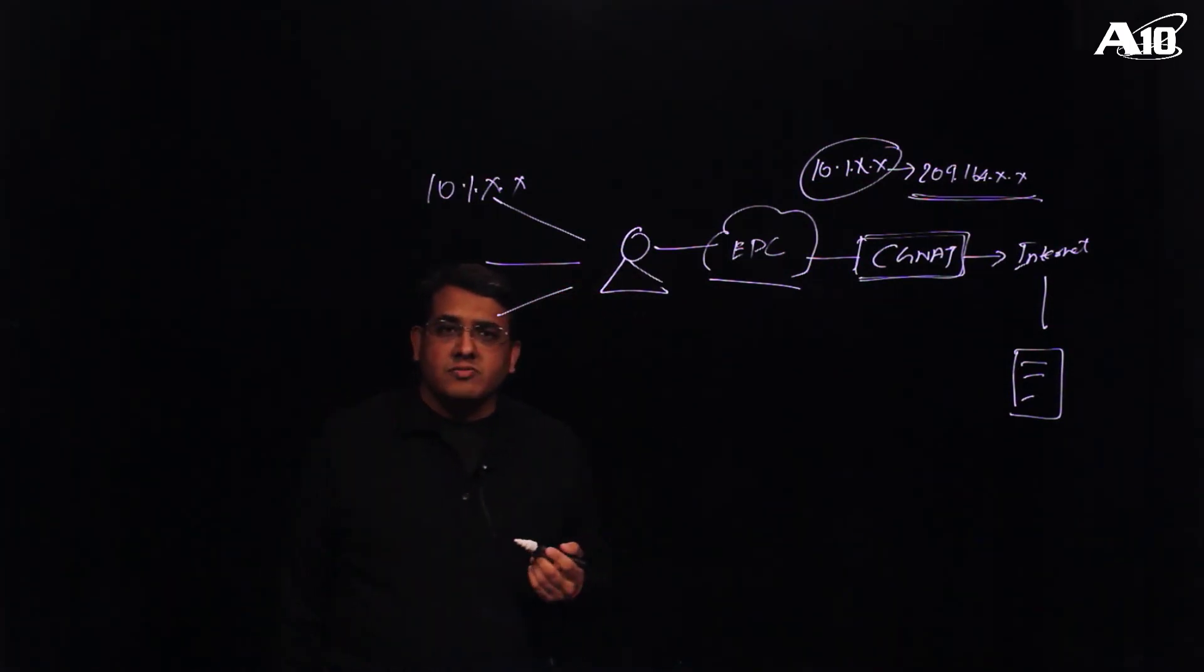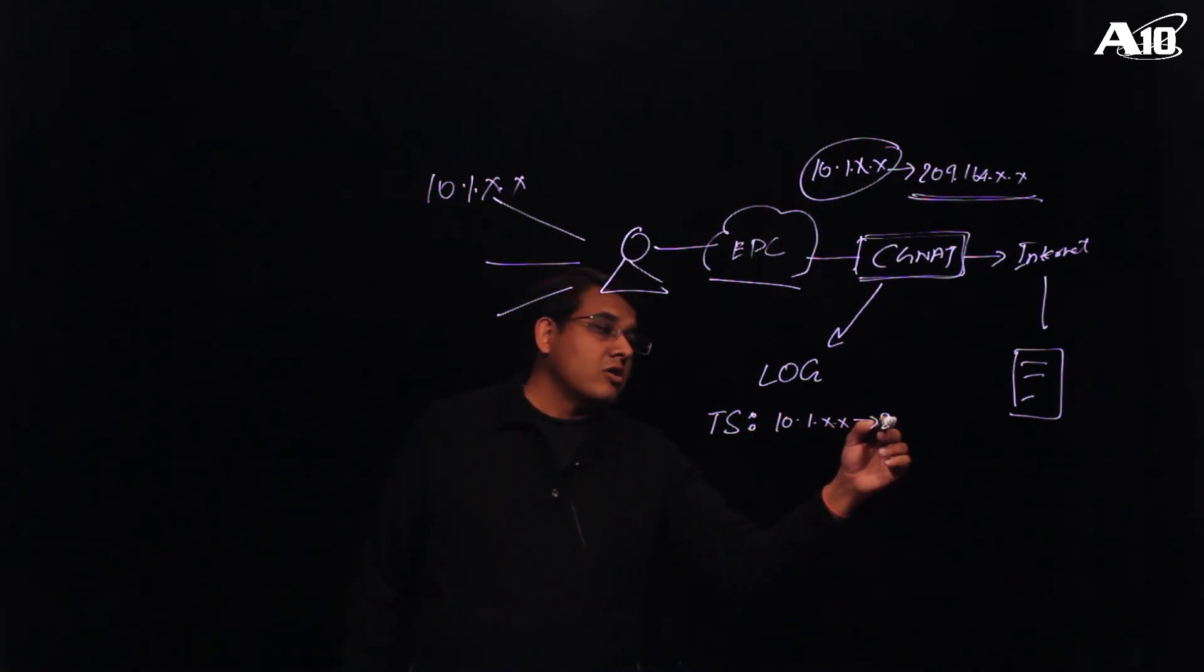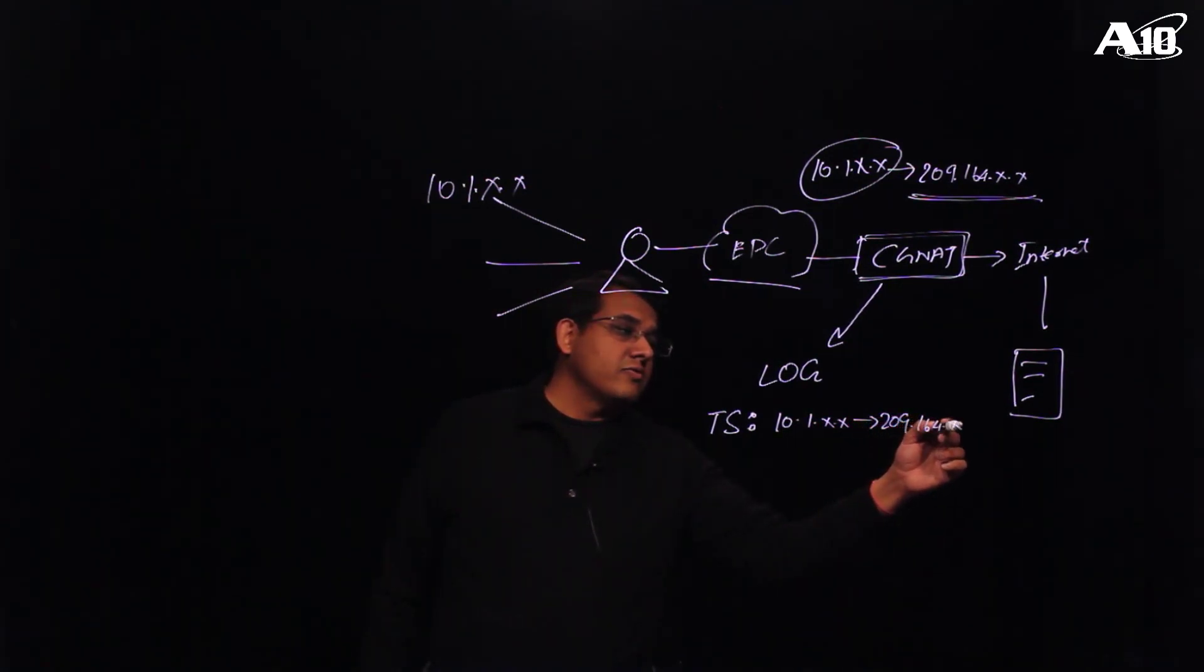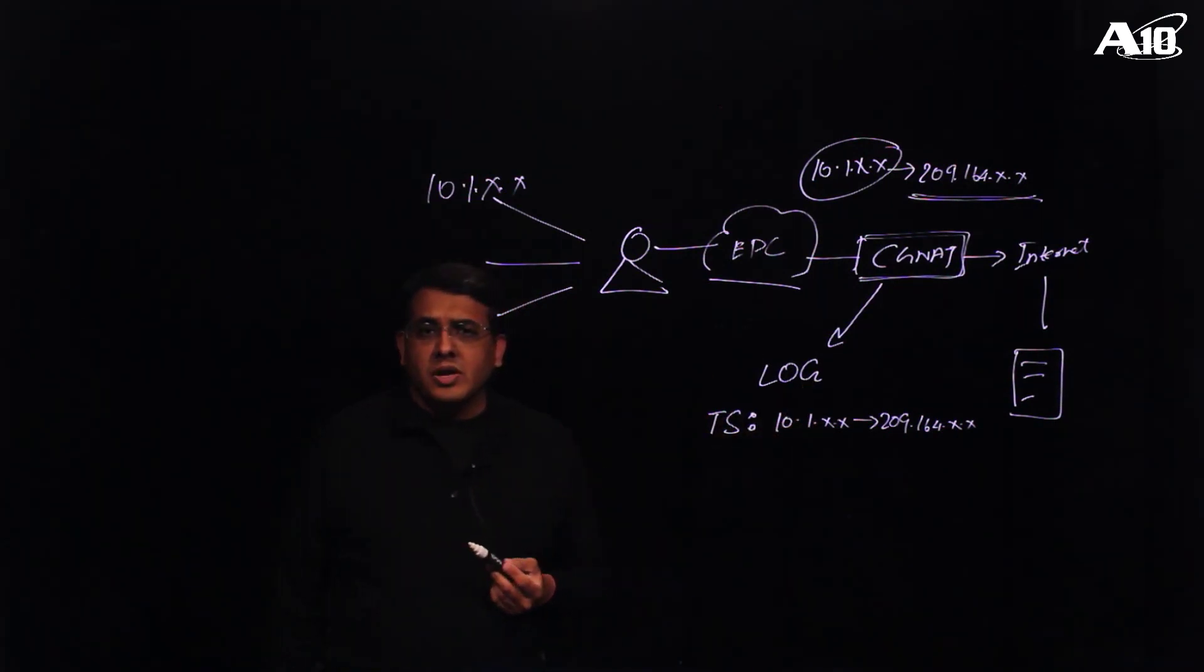So how do the telco or the service providers deal with this problem today? Well, as a part of the federal requirement, they are supposed to log this information about private to public IP mapping. So what they do is they keep it in a log database. They put the timestamp, the private IP like say 10.1.x.x, and the corresponding public IP to which it was mapped, like say 209.164.x.x. So this kind of database is typically maintained by one department in a telco environment.